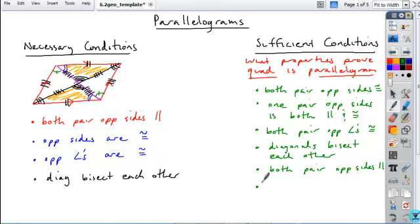Okay, so if both pairs of opposite sides are parallel, and then the final one is a little bit less common, and that is, if your quadrilateral has two-fold rotational symmetry, then you're dealing with a parallelogram. Okay, thank you.